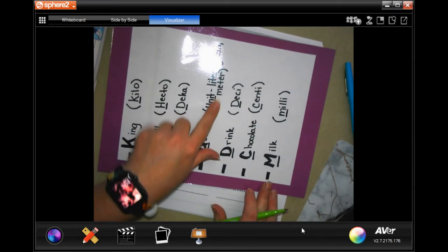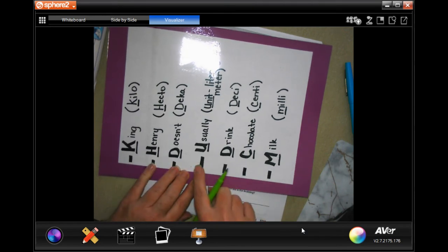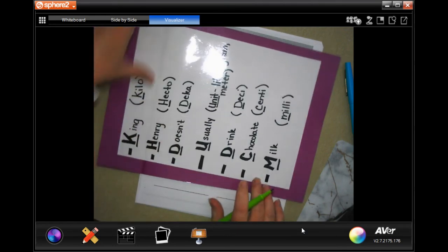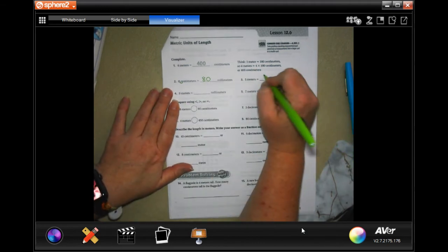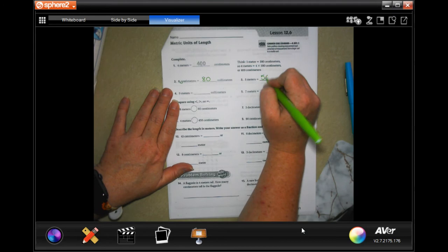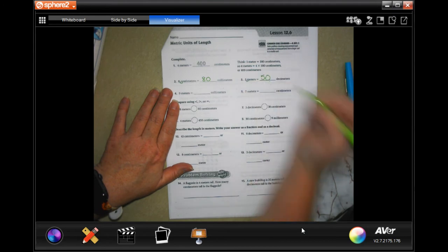Five meters to decimeters. So meters is under unit the decimeters, we're still going to move it one time to the right. So we're going to go from five to fifty, we're moving it one time to the right.